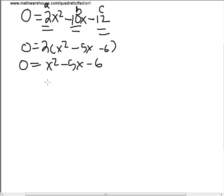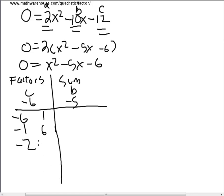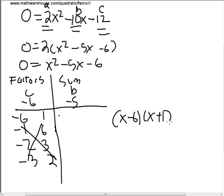We're going to find the factors of c whose sum is b — so factors of negative 6 whose sum is negative 5. The factors of negative 6 are: negative 6 and 1, negative 1 and 6, negative 2 and 3, or negative 3 and 2. We want the one that adds up to negative 5. Negative 6 plus 1 is negative 5 — that's our solution. So we factor it as x minus 6 times x plus 1 equals 0.